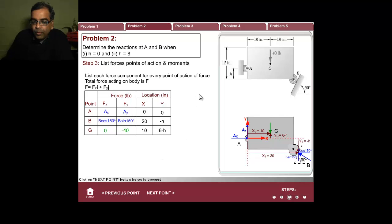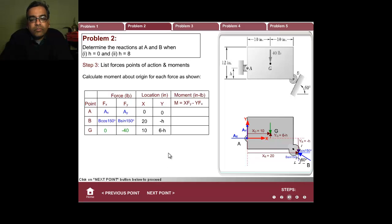This is all the forces and where they're at. Now you can compute the moments. We know how to do that: xfy minus yfx. Moment equals xfy minus yfx. Let's fill out for each of them. x and y are both 0, so that's 0.